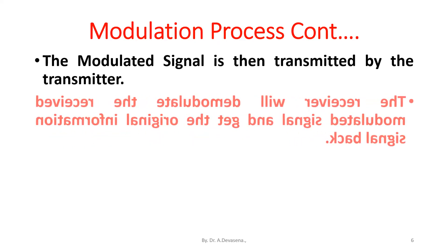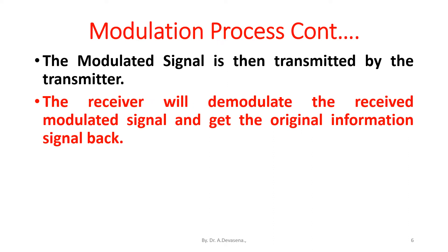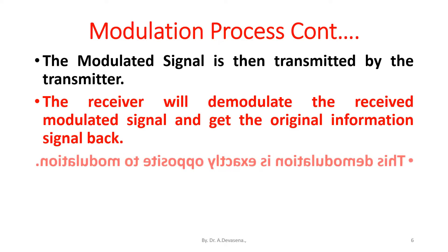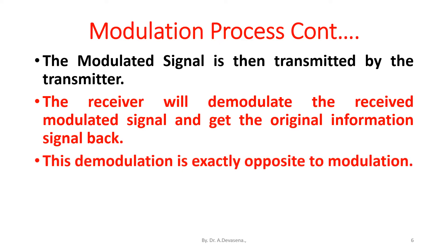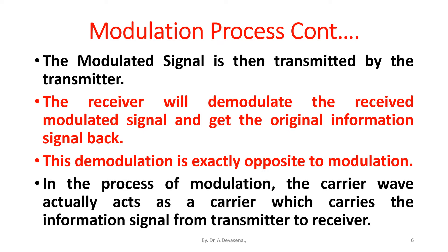The receiver will demodulate the received modulated signal and recover the original information signal. Demodulation is exactly the opposite of modulation. In the modulation process, the carrier wave acts as a carrier that carries the information signal from the transmitter to the receiver.